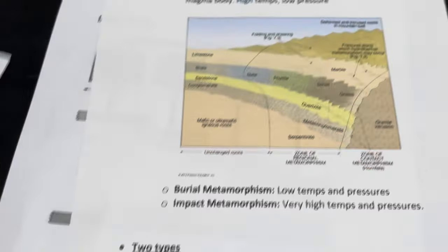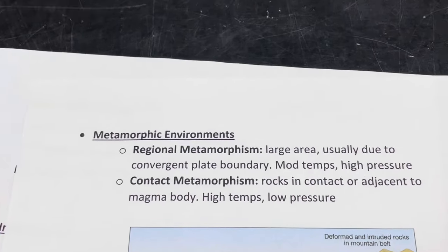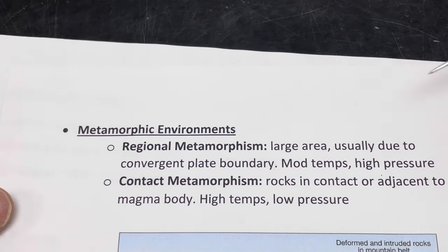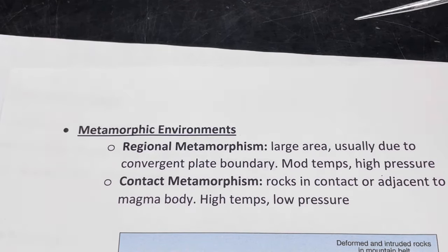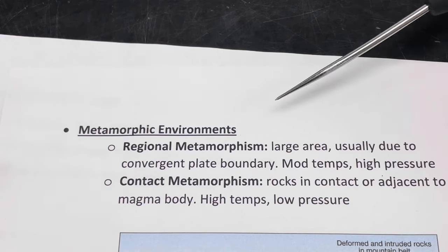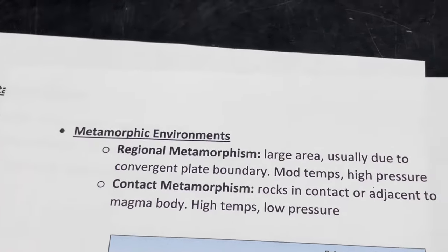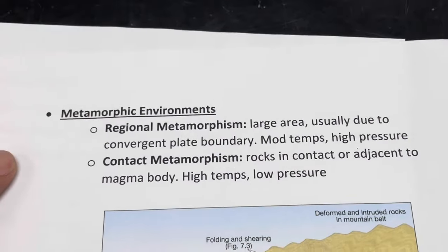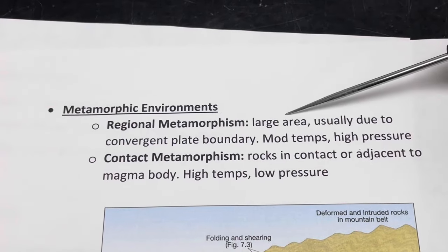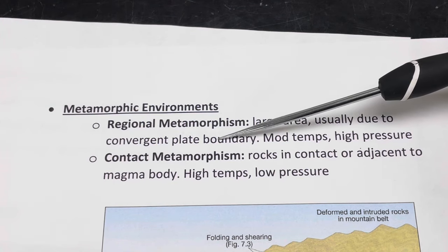So let's go to where we actually see this type of thing taking place — the environments where rocks can become metamorphic rocks. The first one is what we call regional metamorphism. This usually takes place over a big area, a lot of times related to a convergent plate boundary where the two plates are colliding and slamming into each other.